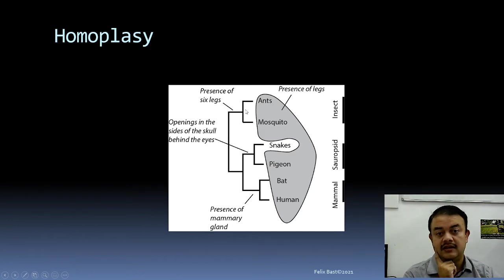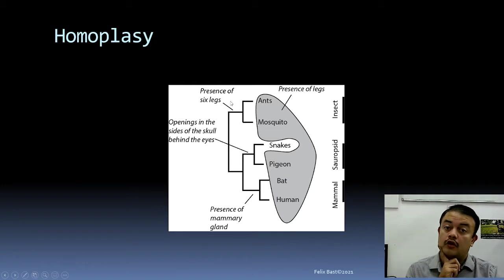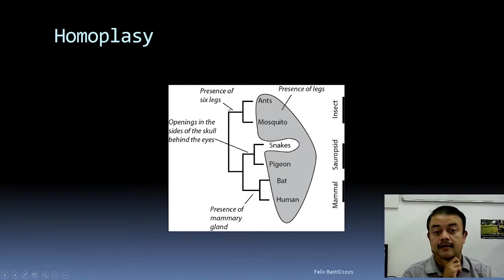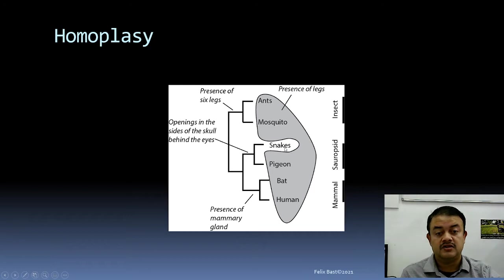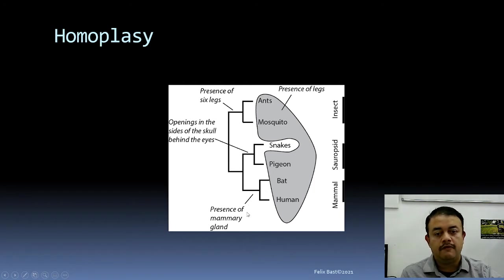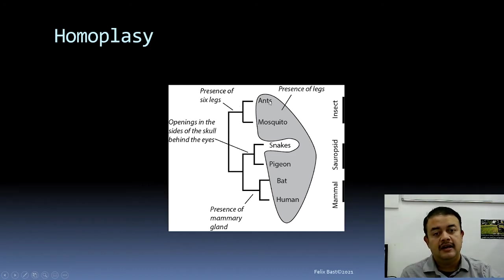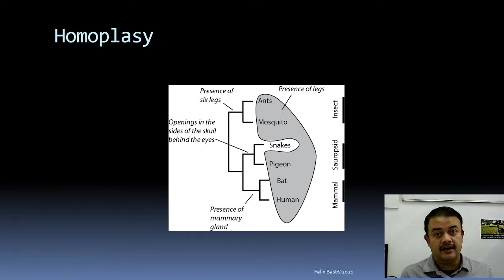A better way is to define groups based on natural homologous characters. For example, presence of six legs defines all insects — ants and mosquitoes. Openings in the sides of the skull behind the eye define sauropsida — snakes and pigeons. Bats and humans are mammals because of the shared derived feature of mammary glands. These are therefore monophyletic clades.